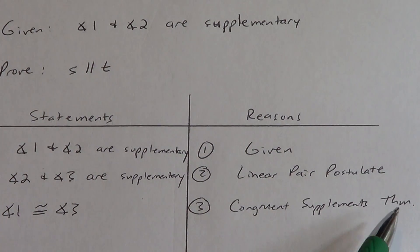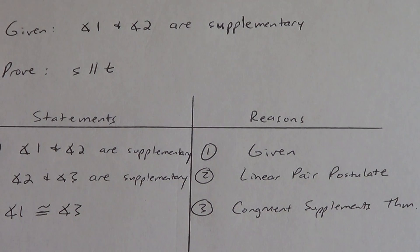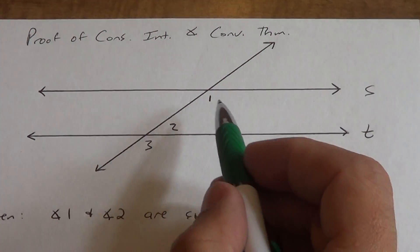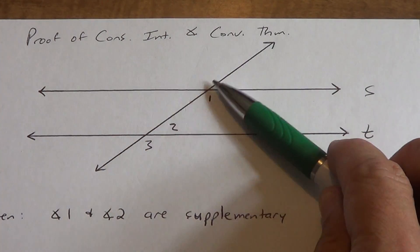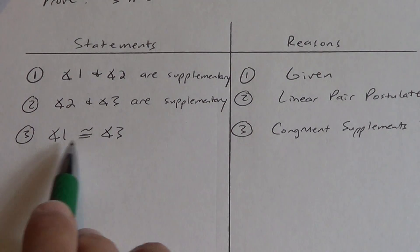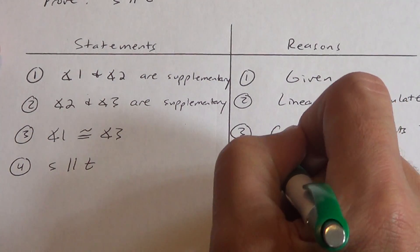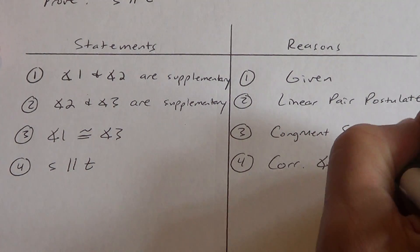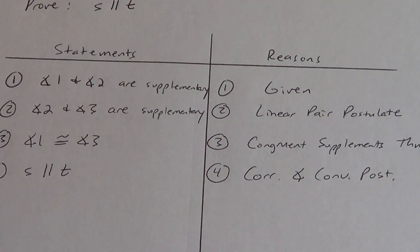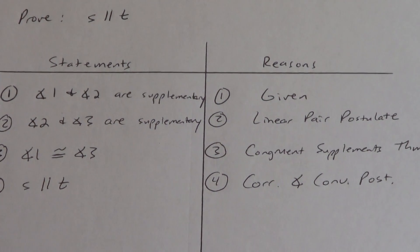Remember what I keep telling you: theorems are just shortcuts. In this case this theorem saved us from seven steps down to three steps — it saved us four steps altogether. We like that kind of theorem. Last thing: angles 1 and 3, ignoring angle 2 now — angle 1 is bottom left, angle 3 is also bottom left, so if the corresponding angles are congruent the lines have to be parallel.